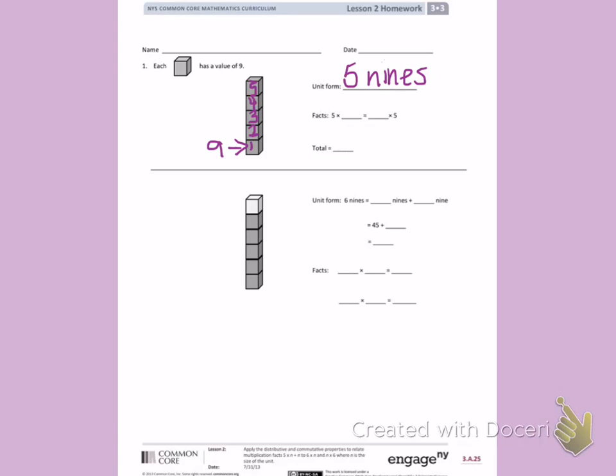As a fact for my commutative property, I have 5 times 9 equals 9 times 5. To find my total, I can count by 5s nine times. I have my fingers out and I'm counting: 5, 10, 15, 20, 25, 30, 35, 40, 45. So my total is 45.